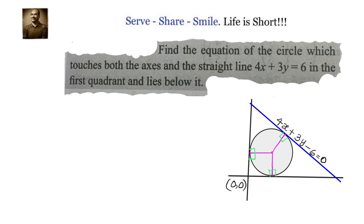Whenever the circle touches both the axes, we know that the centre has coordinates radius comma radius, because the horizontal distance is radius and the vertical distance is radius. So we can take the centre as r comma r. If we can find out the value of r, then we have solved this problem.